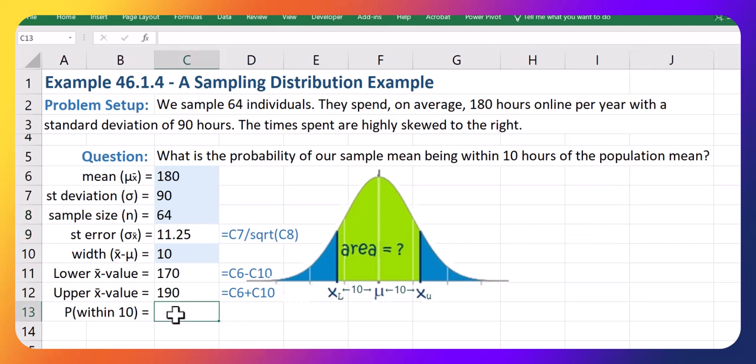Now this just becomes a normal distribution problem where we want the area in the middle. To do this, we use a NORM.DIST call. Use the largest x value first, put in the mean. And in this case, the standard error, because we're dealing with a sampling distribution,